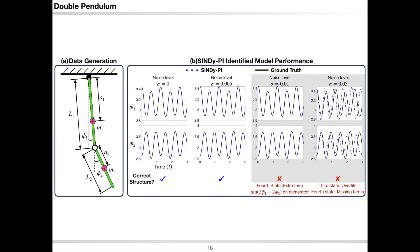SINDy-Pi can also be used to identify complicated rational ODEs, for example the equation of motion of a double pendulum. Although the double pendulum looks like an easy system to identify, its equation of motion actually has a really complicated rational form. However, when the library is built correctly, SINDy-Pi can identify the equation of motion of the double pendulum with certain noise robustness.